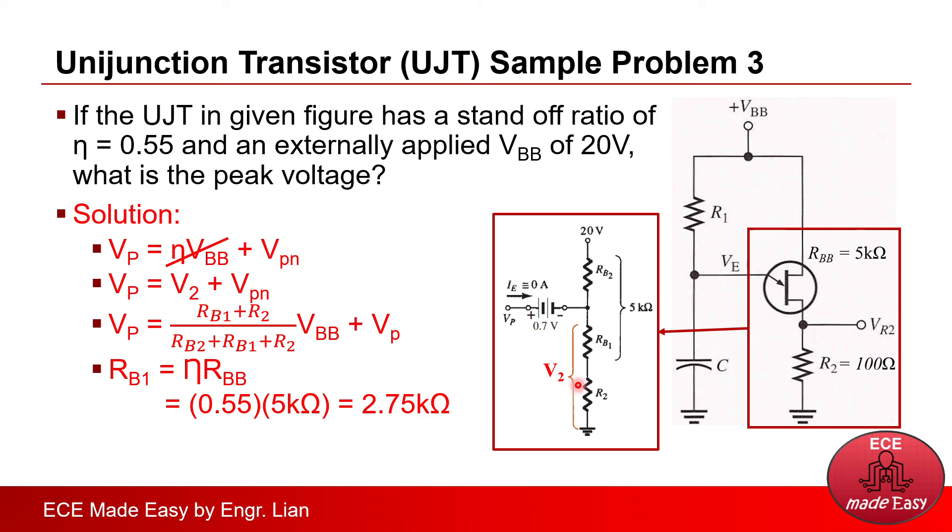Now, if we get Rb1 and Rbb is 5 kilo ohm, we can easily determine Rb2, which is equal to 5 kilo ohm minus Rb1, which is 2.75 kilo ohm. And Rb2 is therefore 2.25 kilo ohm.